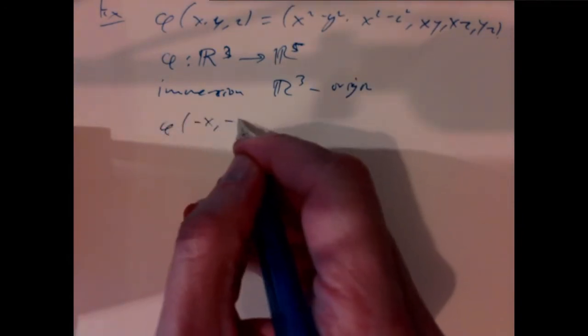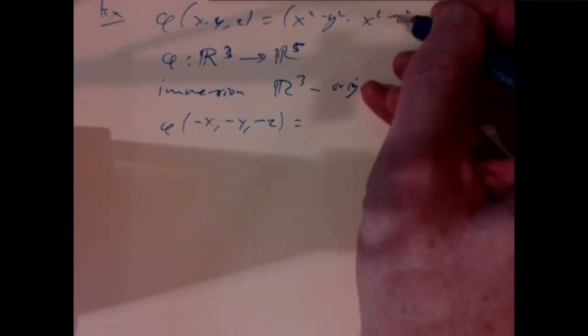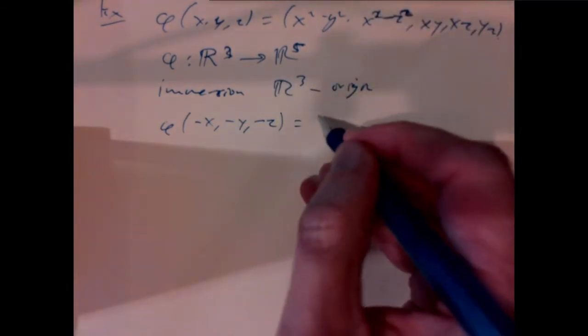Notably, if you plug in (−x, −y, −z), each term is quadratic so all sign changes cancel, giving φ(−x, −y, −z) = φ(x, y, z). So this map is immersing ℝ³ but not embedding it — what it actually does is embed ℝ³ quotiented by this identification.